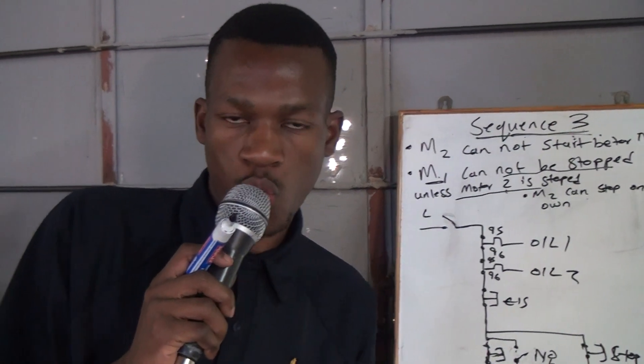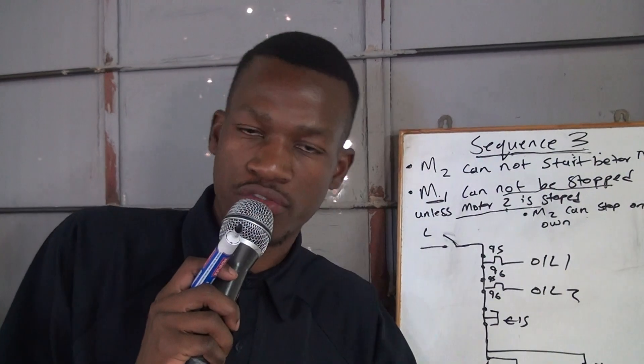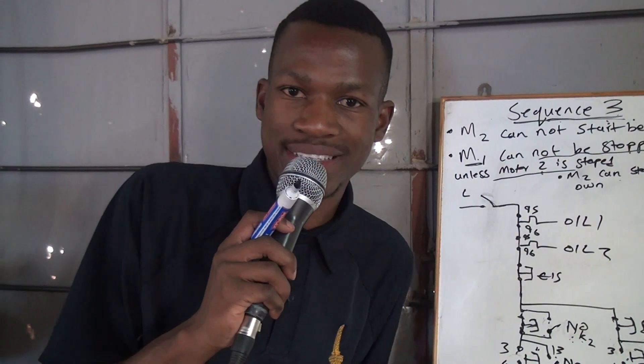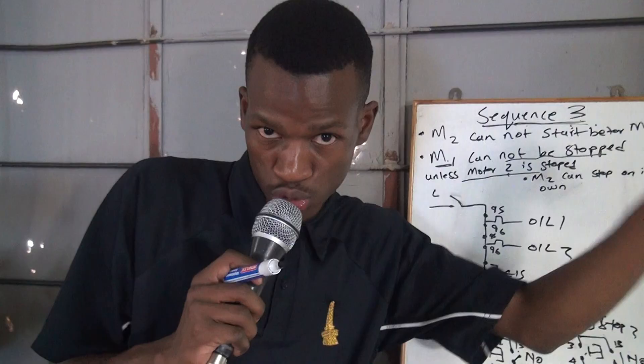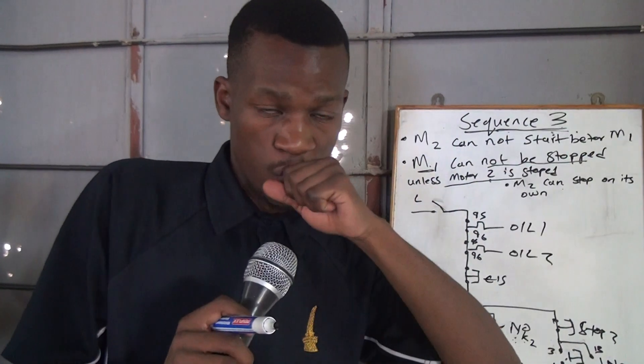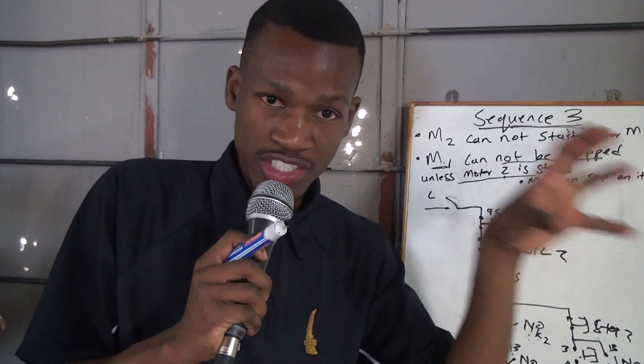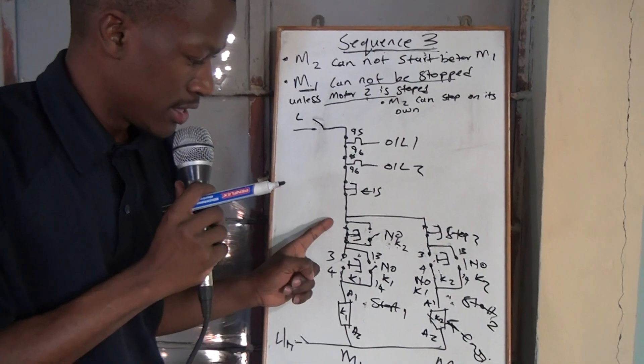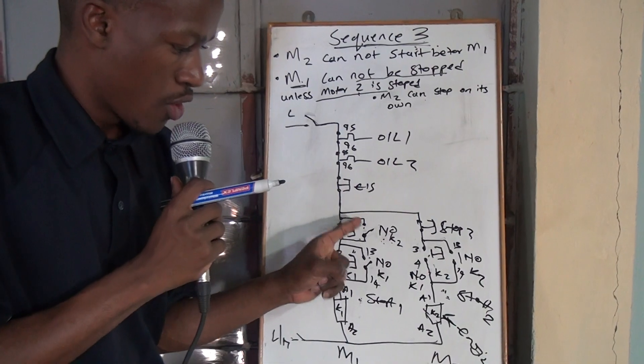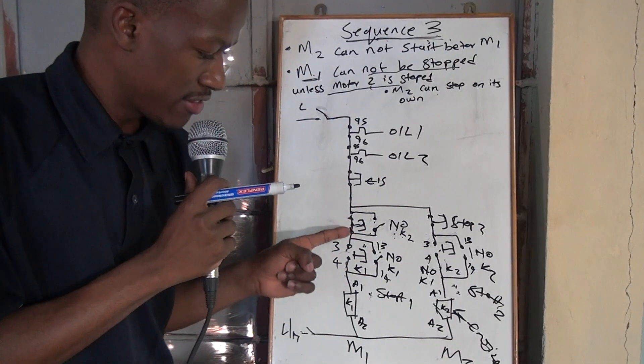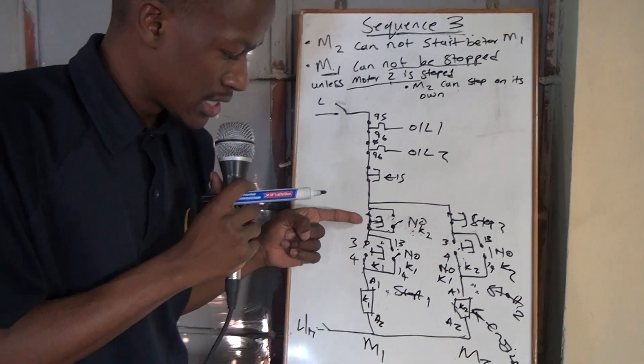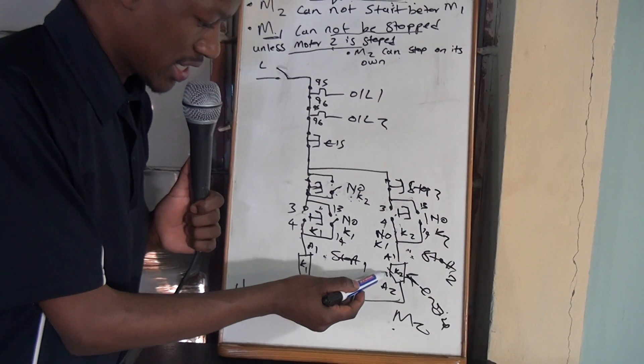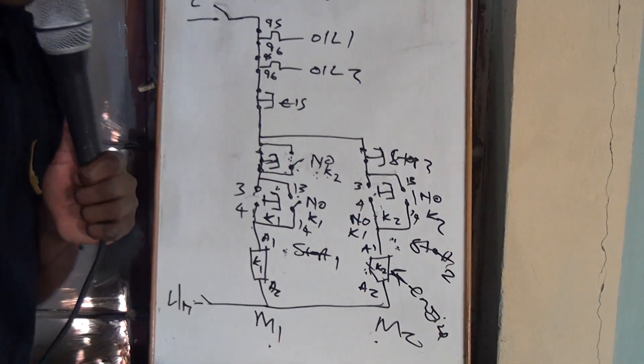it means that when the coil of contact one is energized, it means that contact on Motor 2, or on the side of Motor 2, it has to change its position, either normally closed or normally open. So here we have put a normally open of K2, so that even if you stop Motor 1, current will be able to escape this other side, once this one is energized, this one closes, and that's it.